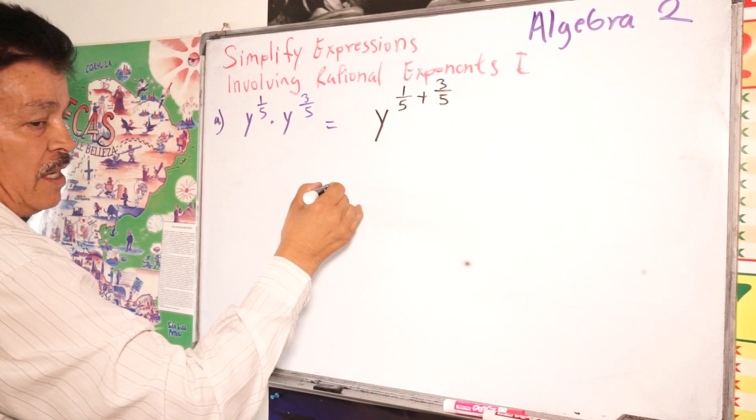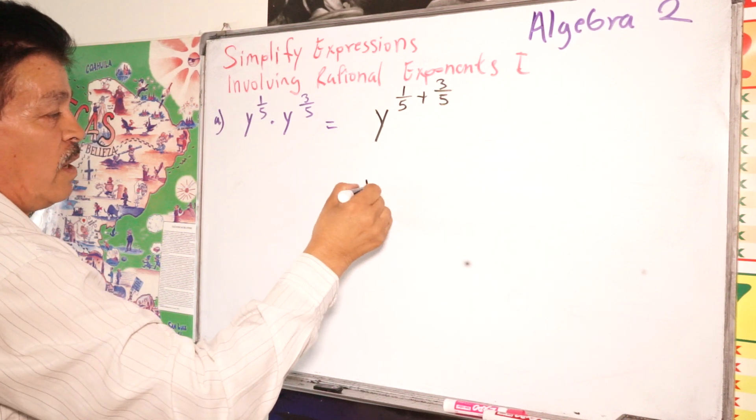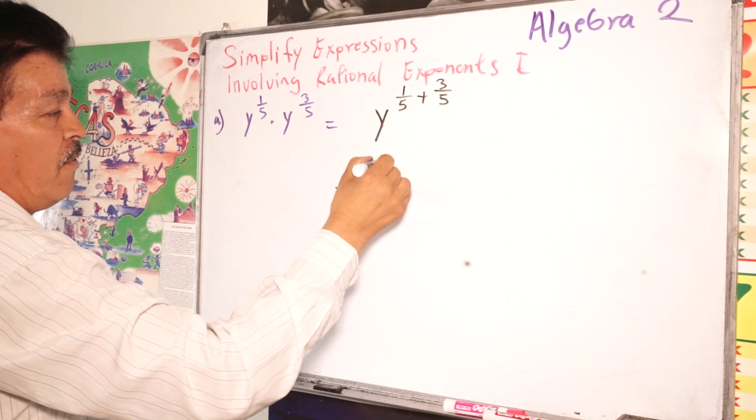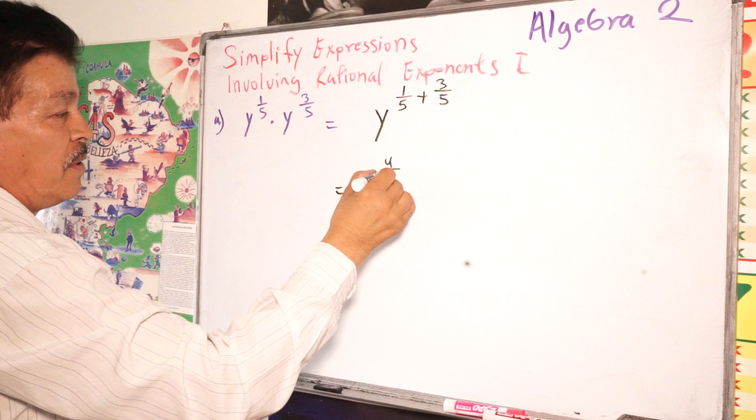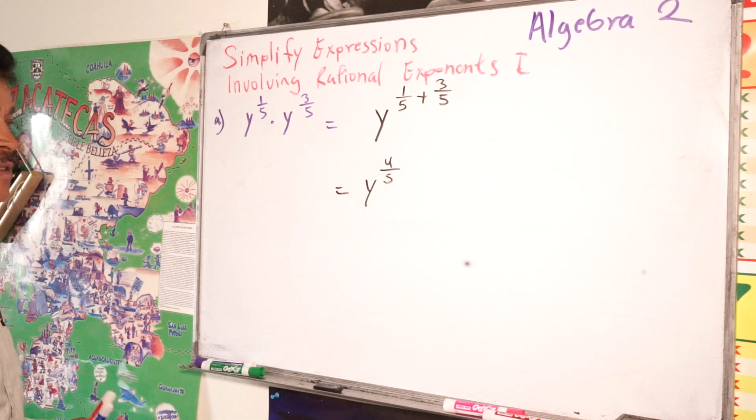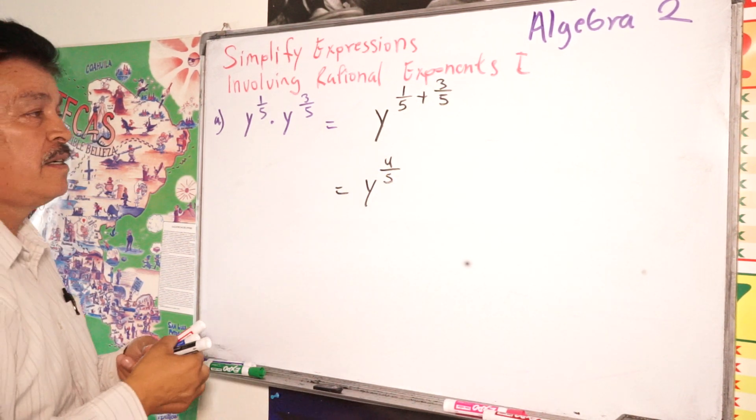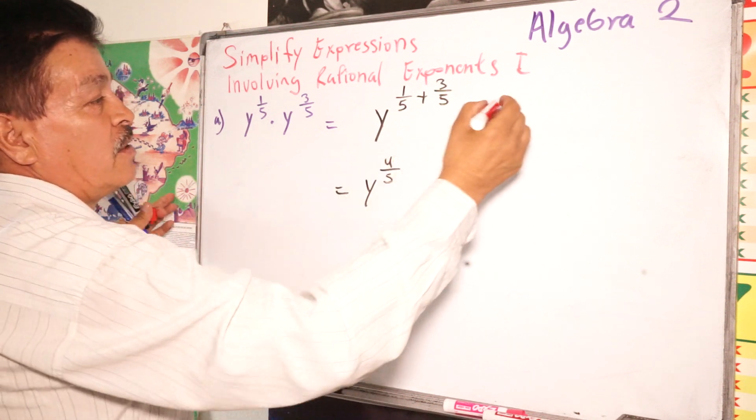So the answer here is Y equals 4 to the 4 to the 5th power. This is our answer. So the rule here, what we apply here is, use here.